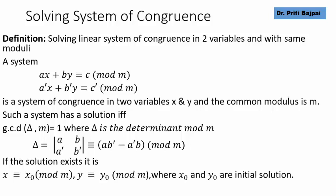Let's say that one solution of such a system was x0 and y0, then all x which are congruent to x0 and all y which are congruent to y0 mod m are the solution.